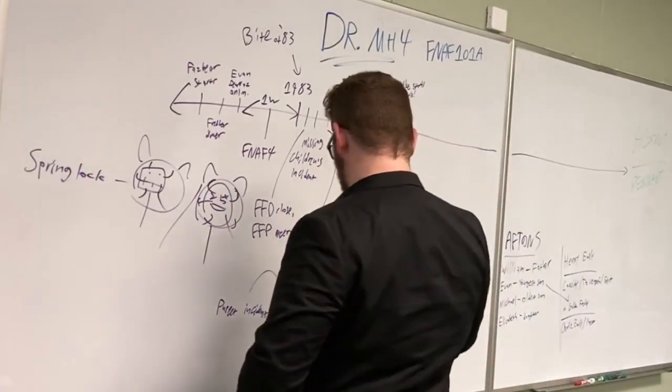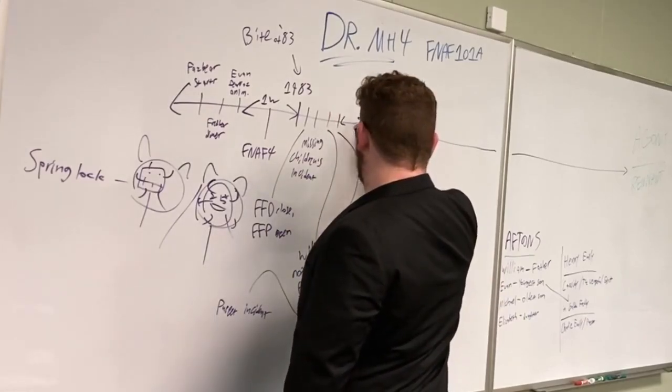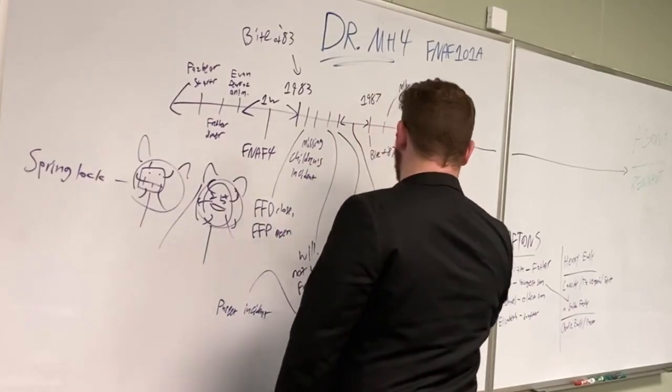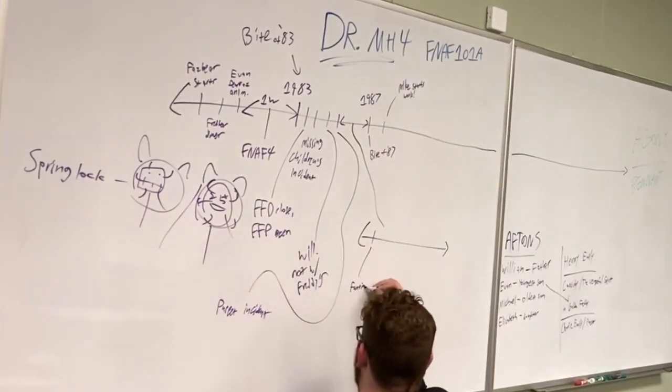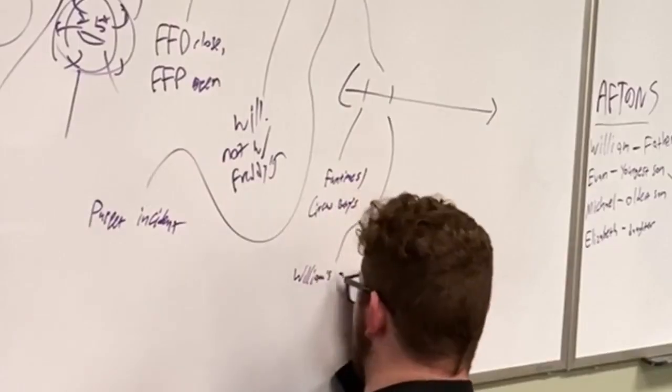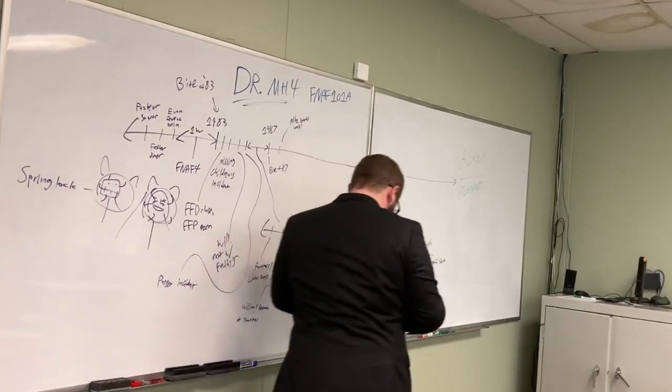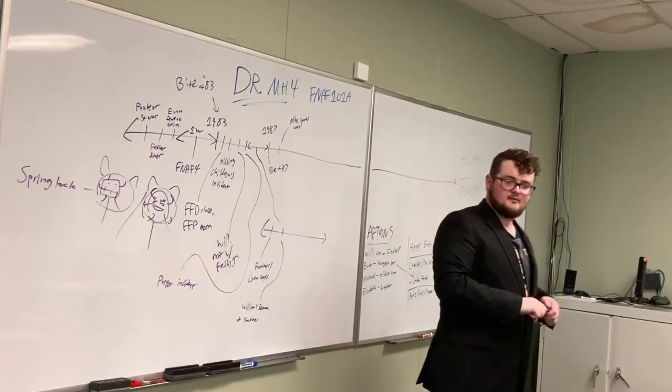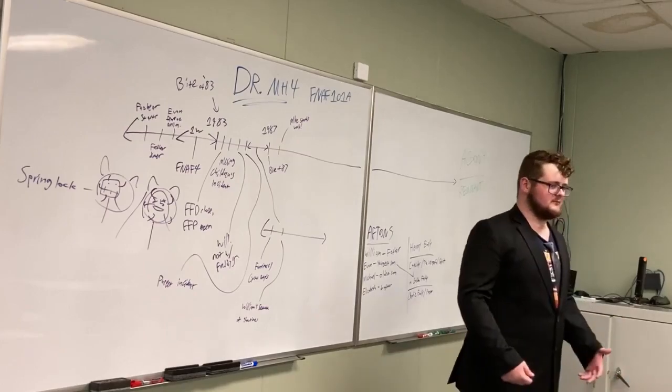In between this period, between the Puppet Incident and 1987, we have... I'm going to make a smaller timeline down here, so I have more space. Creation of the Fun Times slash Circus Babies location. William's destruction of the Showtimes. William, at some point, goes into the Freddy's location that is currently active, because there's a lot of them that open and close because of all of death. So, it's hard to keep track of which location that we're currently at.